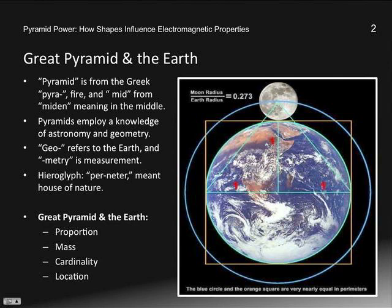The Great Pyramid and the Earth are harmonically coupled in proportion, and also in their mass in terms of magnitude. The pyramid is aligned cardinally, and the location of the pyramid is at the geocentric center of the Earth's landmass, which is at the Giza Plateau in Egypt.